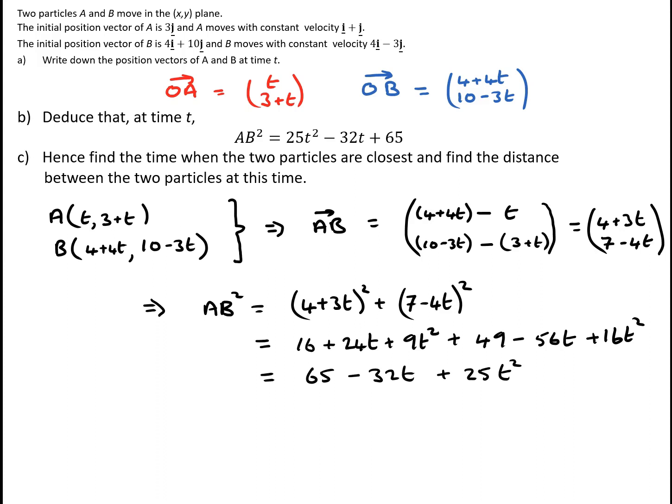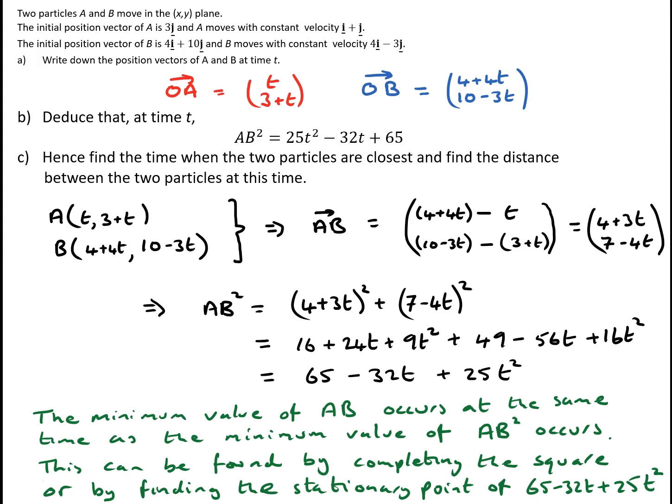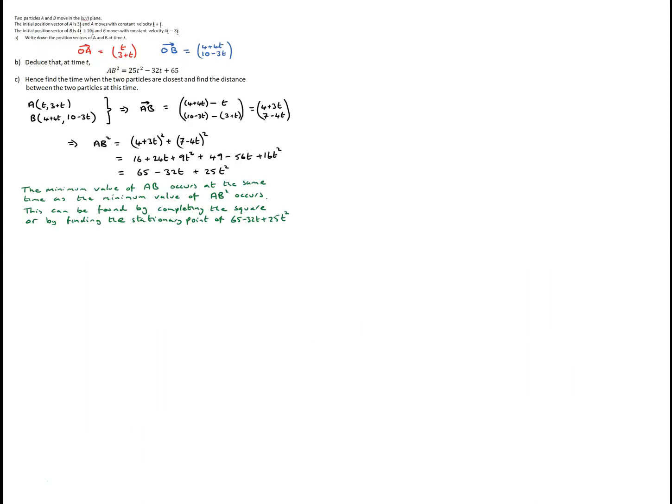To answer part C — finding the time when the two particles are closest together and the distance at that time — if we're trying to find where AB is as small as possible, that will be at exactly the same time as when AB squared is as small as possible. So we want to find the minimum of 65 − 32t + 25t². We can do that either by completing the square or by differentiation to find the stationary point. I'm going to do it by completing the square.